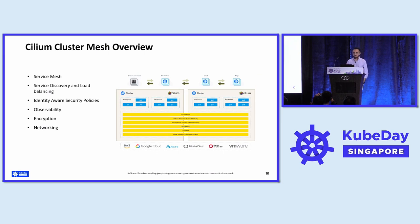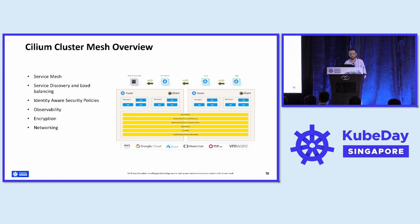One of the best things Cilium cluster mesh offers is that all those requirements are available within one product — you don't need multiple products to make it work. Cilium as a CNI provides connectivity, and since Cilium cluster mesh is aware of multi-cluster, it is aware of routing across multiple clusters. Identity information is shared between clusters, and service discovery and load balancing are built-in. Cilium is also adding many service mesh features within the product.